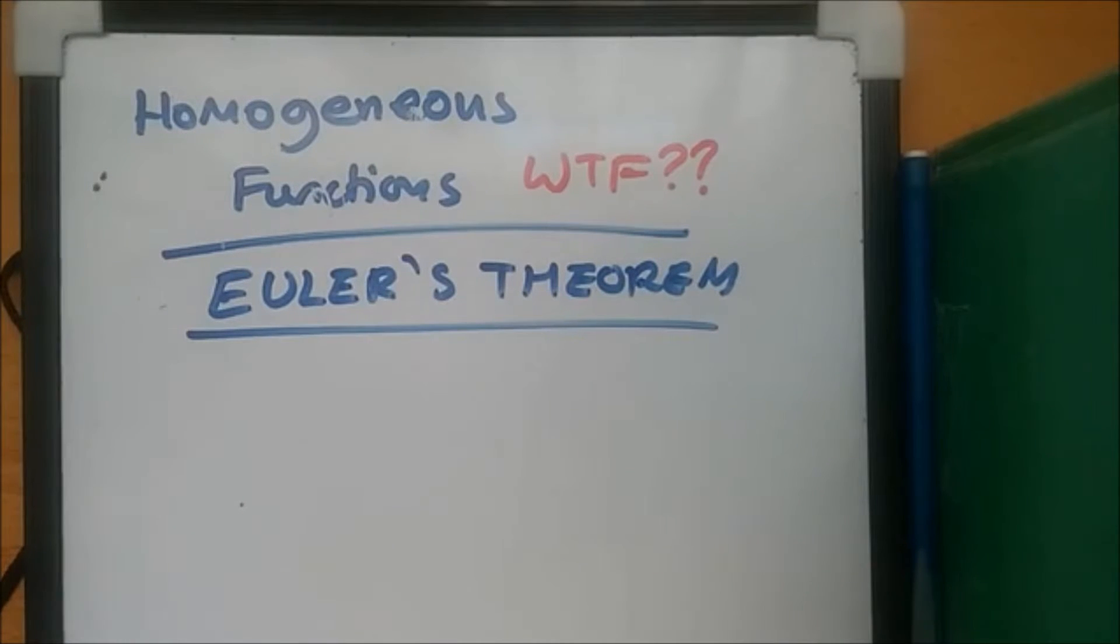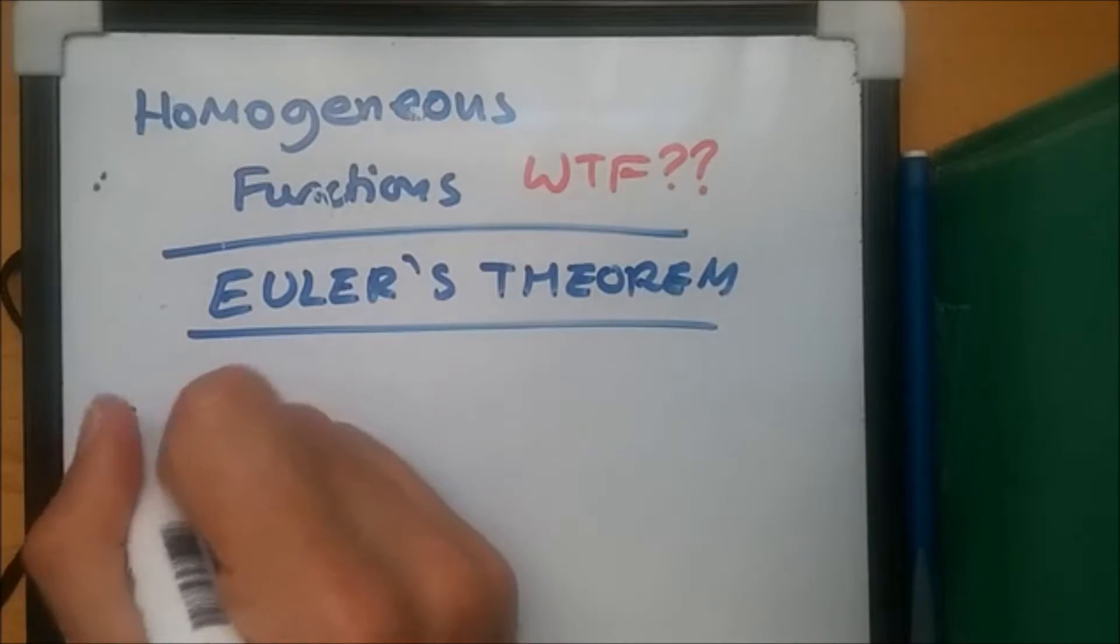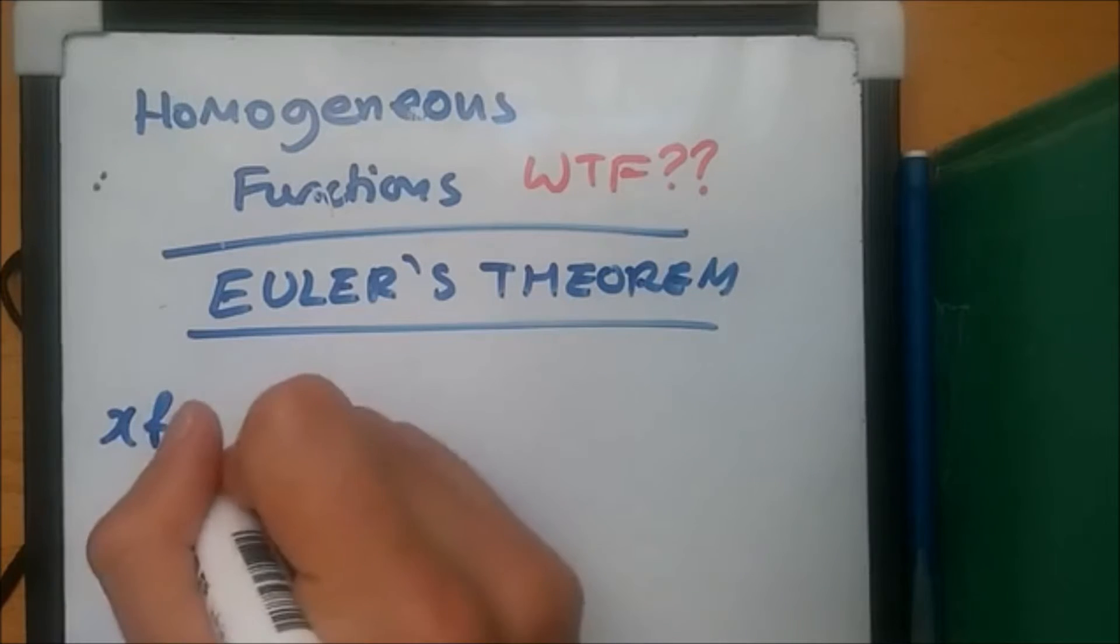So what does Euler's theorem state exactly and how do we use it? Well, in easy terms, it tells you that the function is homogeneous of degree k and this implies directly that x times the first partial derivative of this function